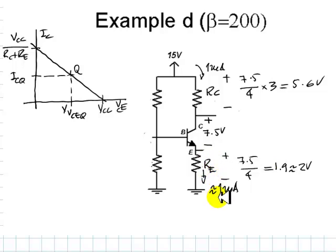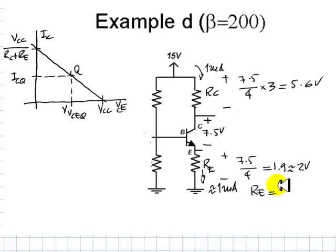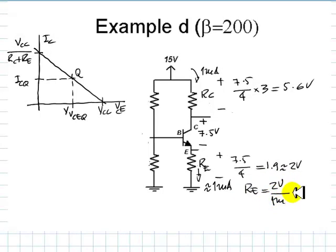Then RE will be 2 volts divided by 1 milliamp, that is, of course, 2 kilo ohms. And that is how we found this one.